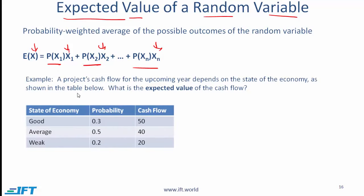This is better understood through an example. Say you are running a project and the cash flow for the upcoming year depends on the state of the economy. If the economy is good, the cash flow will be 50 and the probability of this scenario is 0.3. With an average economy, probability 0.5, the cash flow is 40. With a weak economy, probability 0.2, the cash flow is 20. What is the expected value of the random variable — the cash flow?